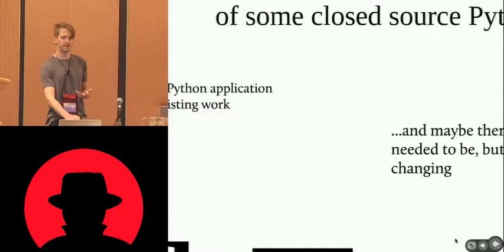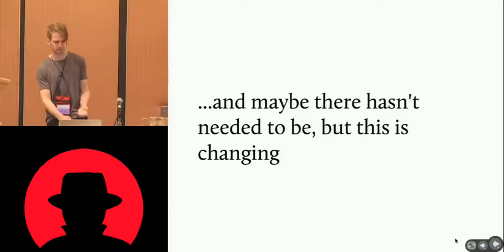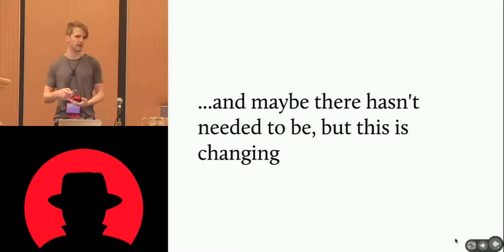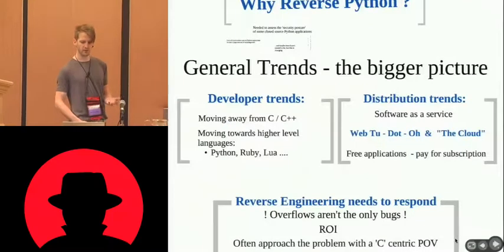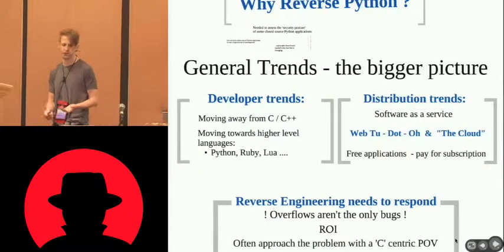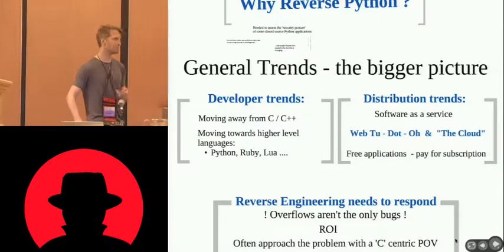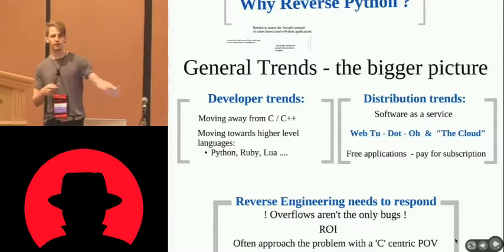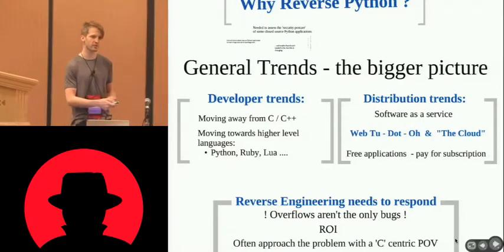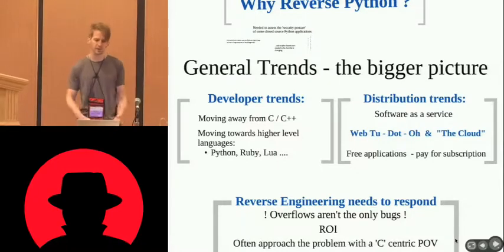There hasn't been a huge amount of work done in this area, mainly because a lot of Python code is distributed as .py source code — you don't need to reverse it. But things are changing: people are using Python in increasing amounts for commercial applications. People are moving away from C and C++ for the same reasons half the talks at this conference are happening — C and C++ is hard. Python's one example, but Ruby, Lua in game scripting engines, and even C# .NET-type languages are all applicable. You can take these principles and apply them to any high-level language.